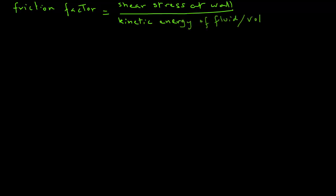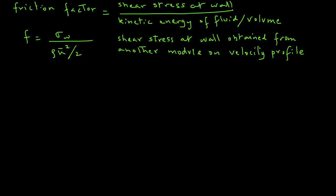Friction factor is a ratio between the shear stress at the wall divided by kinetic energy of fluid per unit volume of that fluid element. So we can write this mathematically as friction factor represented by lowercase f equals sigma w, which is the shear stress at the wall, divided by rho u bar squared over 2.